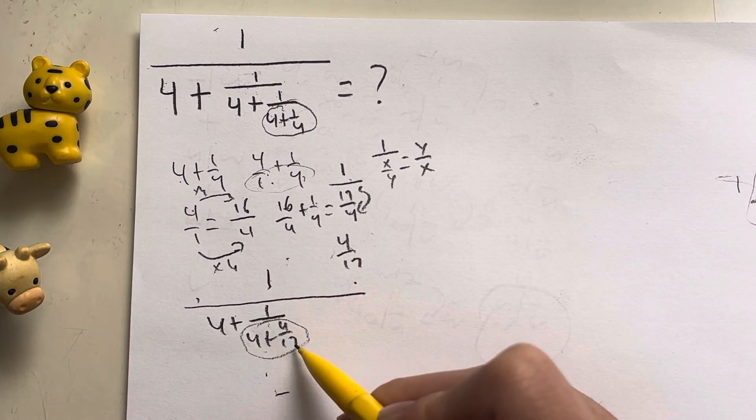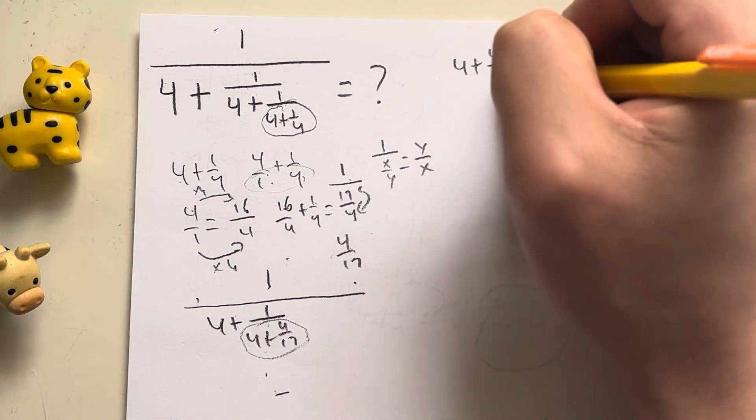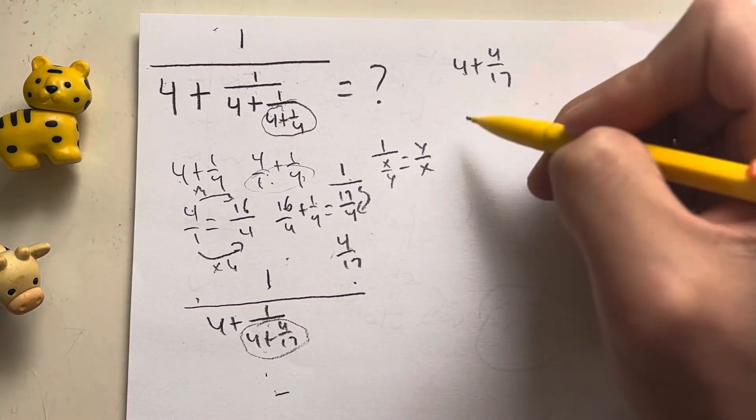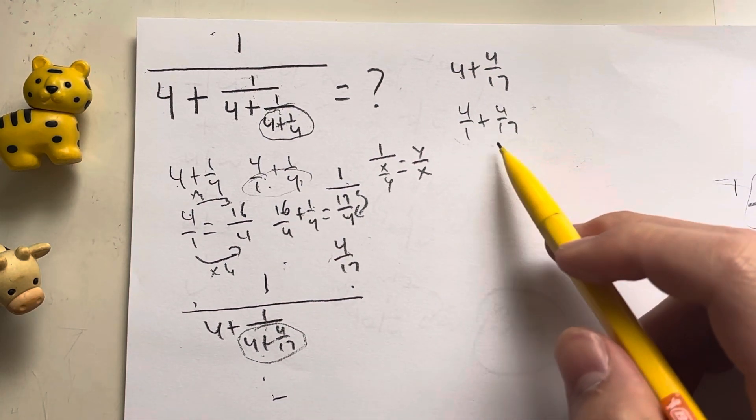Now I have to evaluate 4 plus 4 over 17. So how do I do that? 4 plus 4 over 17. I need a common denominator again, because it's the same as 4 over 1 plus 4 over 17. My common denominator is going to be 17.